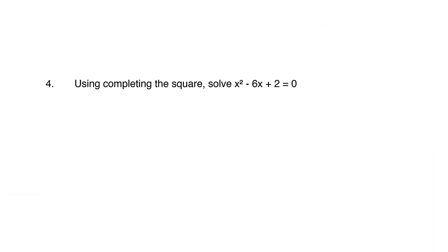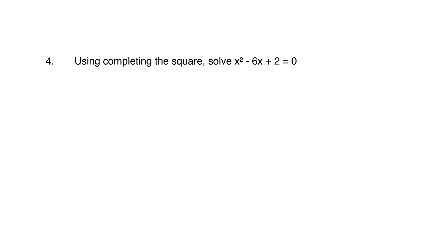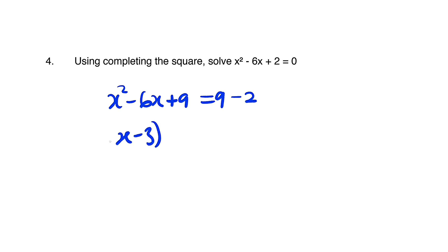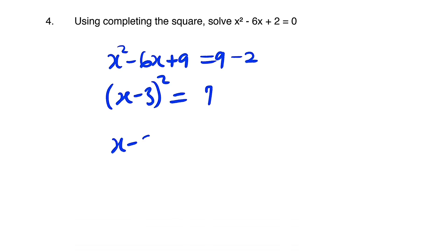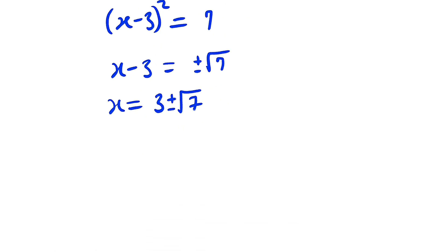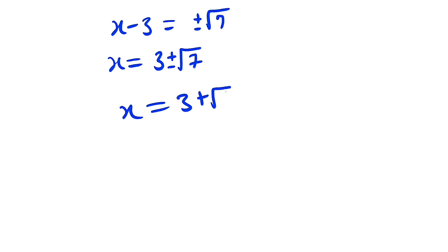Let us move on to question number 4. We are asked to solve x squared minus 6x plus 2 by completing the square. Taking the constant to the right: x squared minus 6x equals negative 2. Half of negative 6 is negative 3, squared is 9, so we add 9 to both sides. The left side becomes x minus 3, all squared, and the right side is 7. Therefore x equals 3 plus or minus the square root of 7.